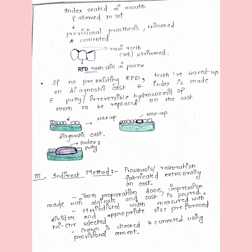If we do not have a pre-existing RPD, then we have to take an impression and pour a diagnostic cast. On that, we have to wax up the teeth using artificial denture teeth. Then the index is made with irreversible hydrocolloid or alginate of the tooth to be replaced on the cast.